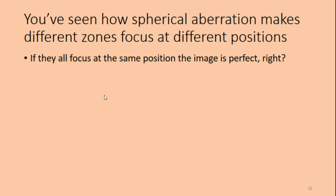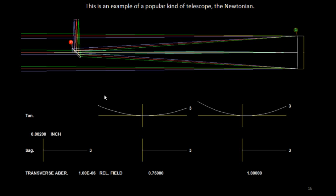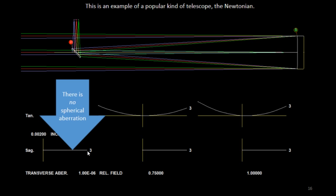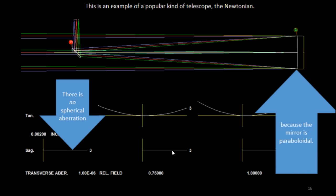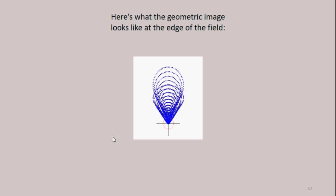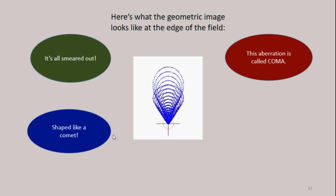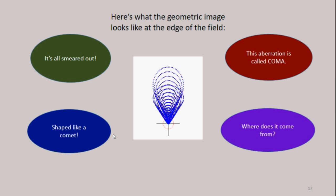Okay, you've seen how spherical aberration makes different zones focus at different positions. So you might think, if they all focus at the same position, the image is perfect, right? Wrong. There may be other aberrations too. Here's an example of a popular telescope, of the Newtonian telescope. There's no spherical aberration, because the mirror is a paraboloid. But the image is perfect only on the optical axis. Here's what the geometric image looks like at the edge of the field. It's all smeared out, shaped like a comet. It's called coma. And we can wonder, where does that come from?